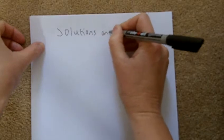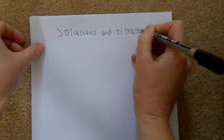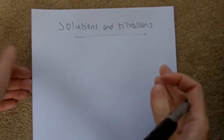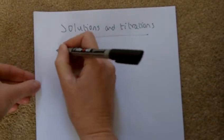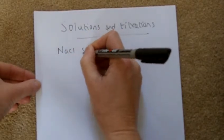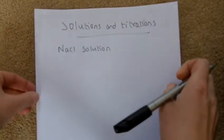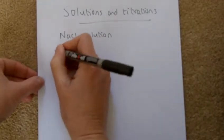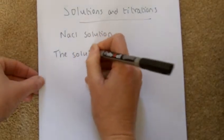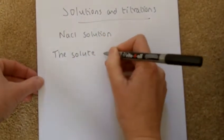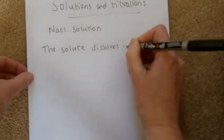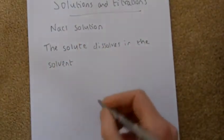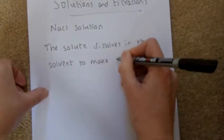You need to make notes on solutions and titrations. We're going to start with a solution — what actually is a solution? If I said to you to go and make a solution of sodium chloride, what does that mean? So we have some key terms: the solute dissolves in the solvent to make a solution.